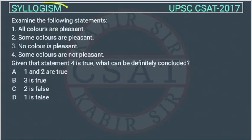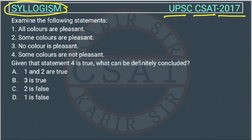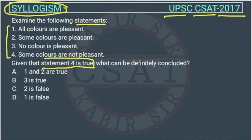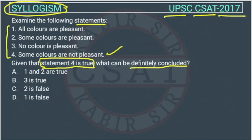This is a question of reasoning form syllogism chapter, asked by UPSC in CSET paper of 2017. Examine the following statements. These four statements are given, and statement four is true. What can be definitely concluded? These options are given. We will solve this question through Venn diagram.